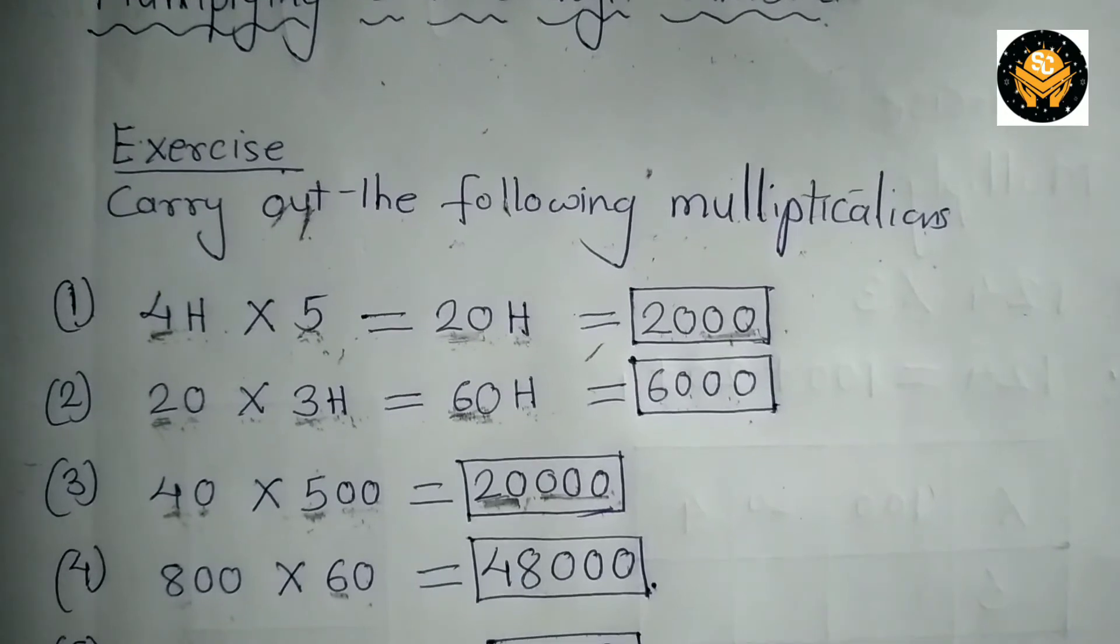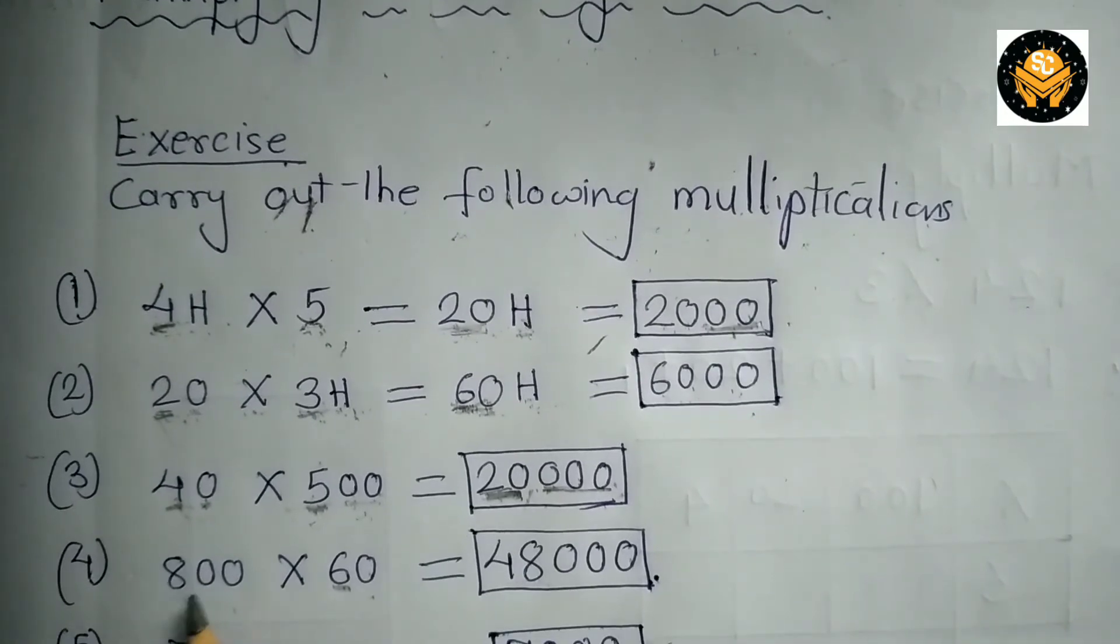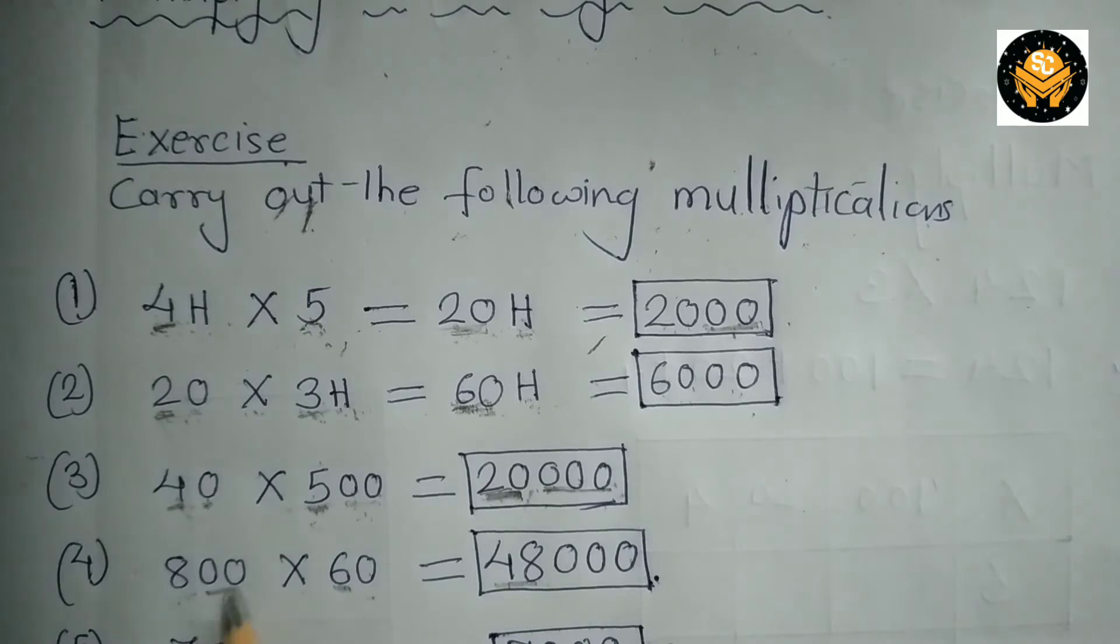Now the next example is 800 multiplied by 60. 8 multiplied by 6, the answer is 48. 8 6s are 48. Then you are going to put these 0s, 2 0s and this 1 0 means total 3 0s you are going to write in front of this product. So the number becomes 48,000. So the product of 800 multiplied by 60 is 48,000.